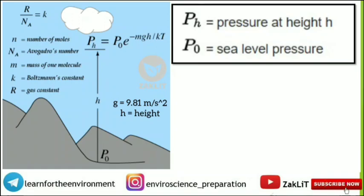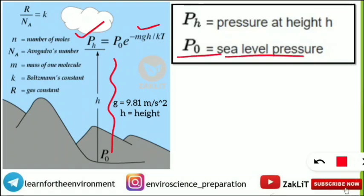Here is a very important formula to find the pressure at height h. The formula is: pH = P₀ · e^(−MGH / KT), where P₀ is the sea-level pressure. The small k is the Boltzmann's constant, and capital NA is Avogadro's number, which is 6.022 × 10²³.